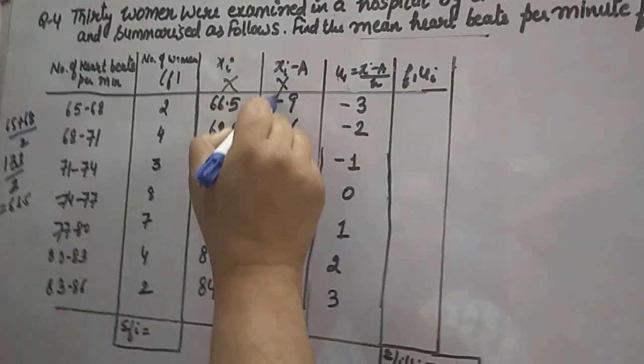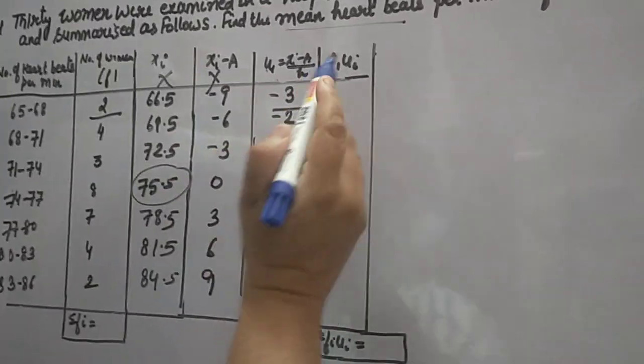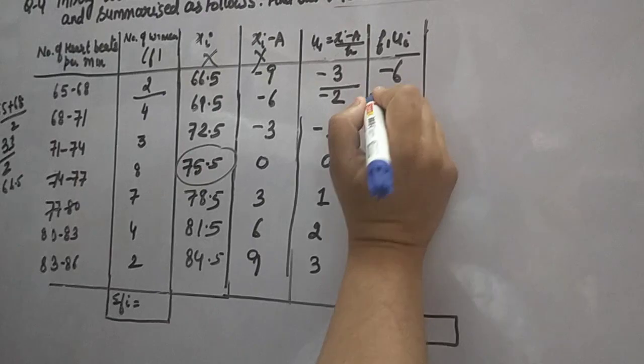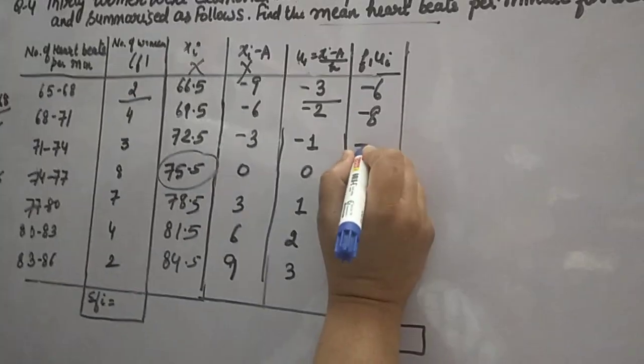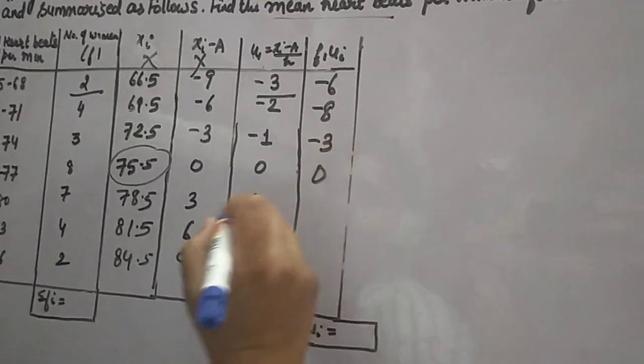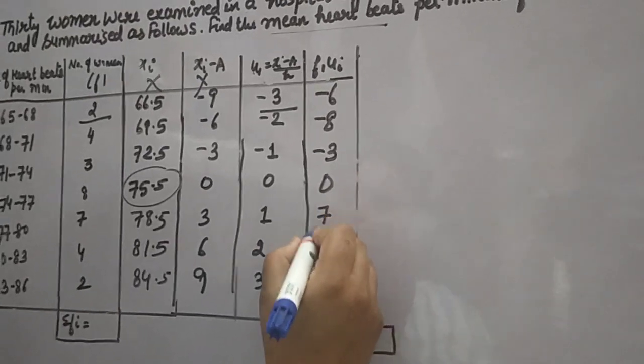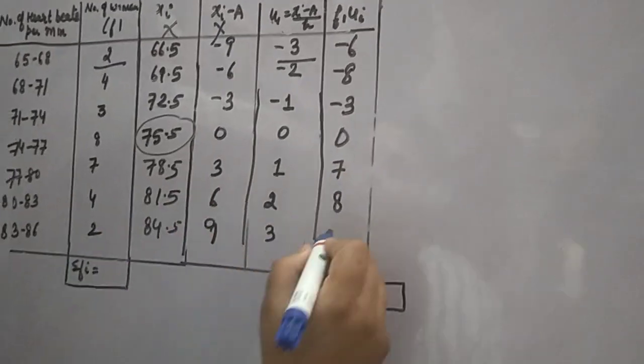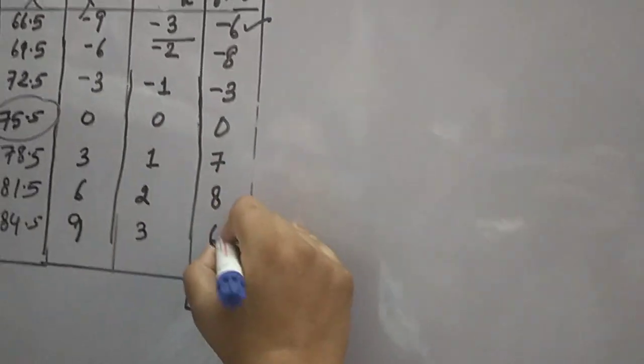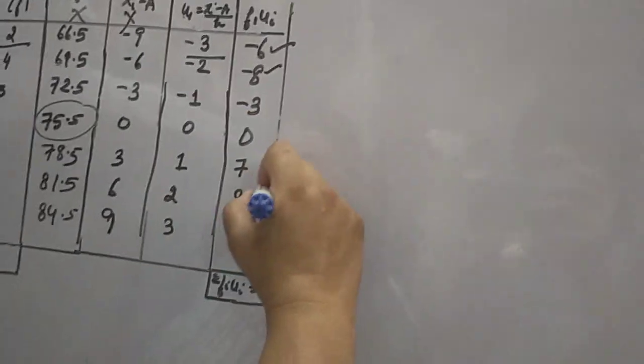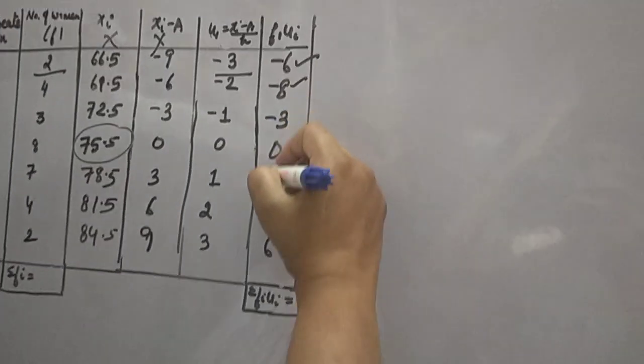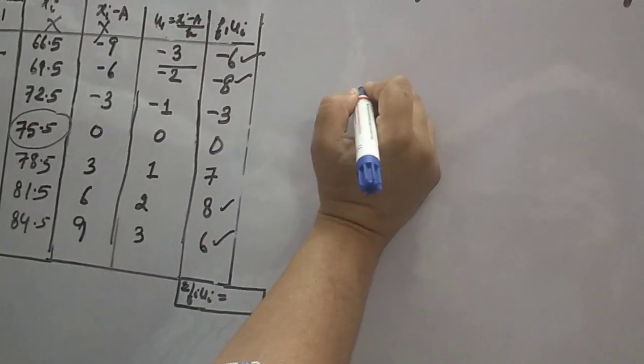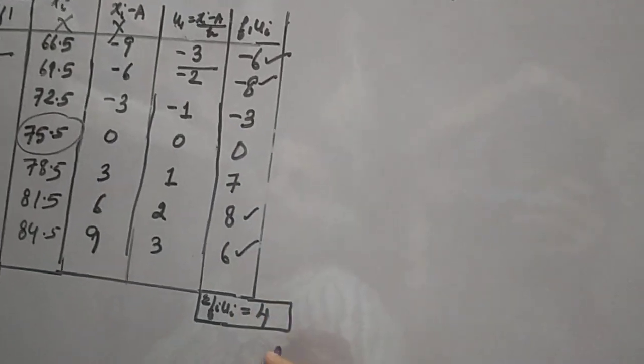Now we need to find fi ui. 2 into minus 3 equals minus 6. 4 into minus 2 equals minus 8. 3 into minus 1 equals minus 3. 8 into 0 equals 0. 7 into 1 equals 7. 4 into 2 equals 8. 2 into 3 equals 6. Minus 6 plus 6 cancels. Minus 8 plus 8 cancels. Minus 3 plus 0 plus 7 equals 4. So sum of fi ui equals 4.